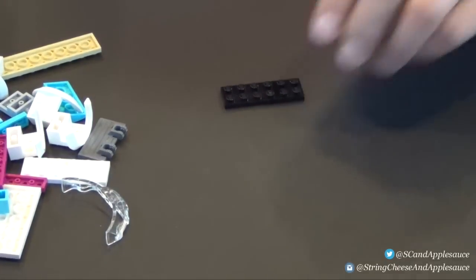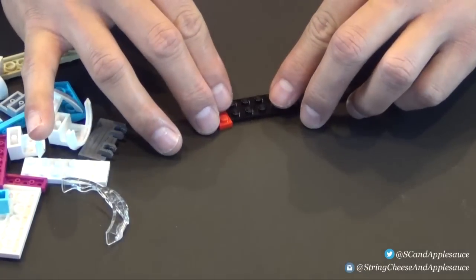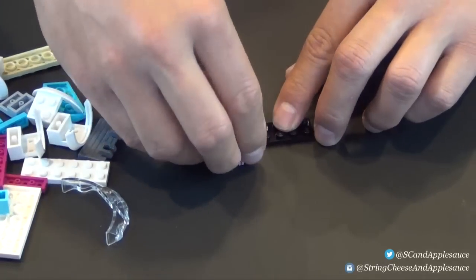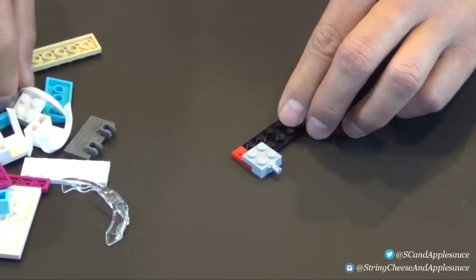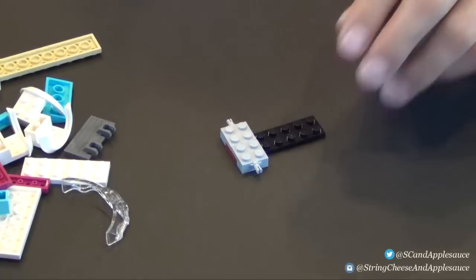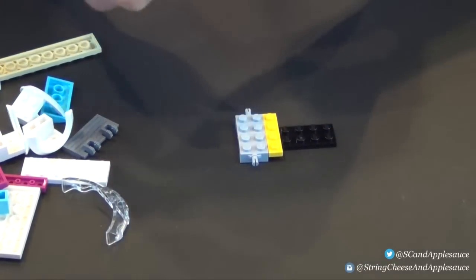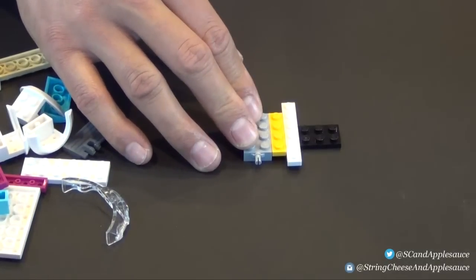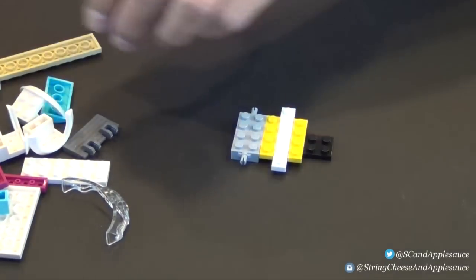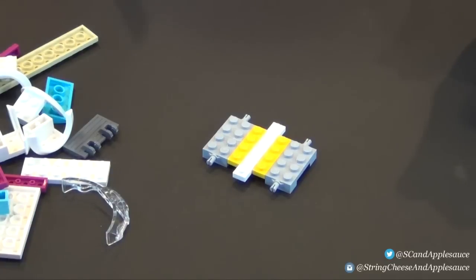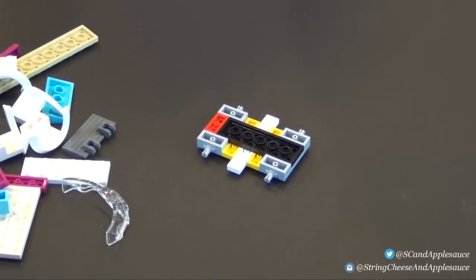That creates a little bench. We do both of them just the same, all four studs on the bottom. There you go, little table, two little stools. That's it for the accessories. So now we're going to build our little car that's going to pull the caravan trailer around. We start with these plates just kind of back to back.